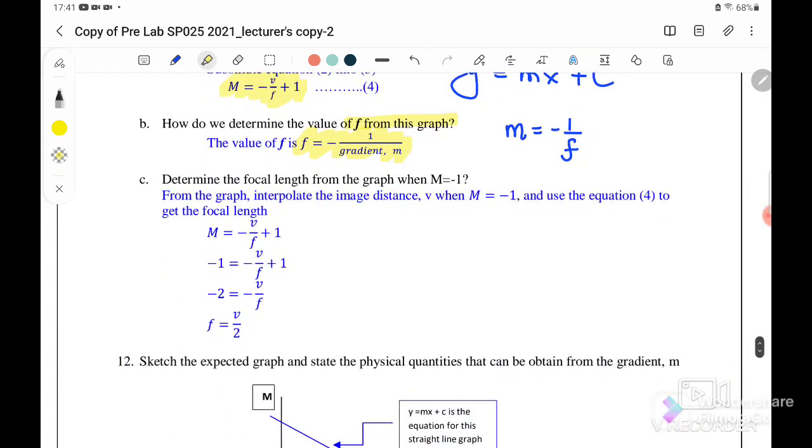Next, determine the focal length from the graph when M equals negative 1. So from the graph, we try to interpolate the distance of the image v. So when M equals negative 1, use the equation 4 to get the focal length. So from the graph we will get the value of v, then you will get the focal length from the graph.